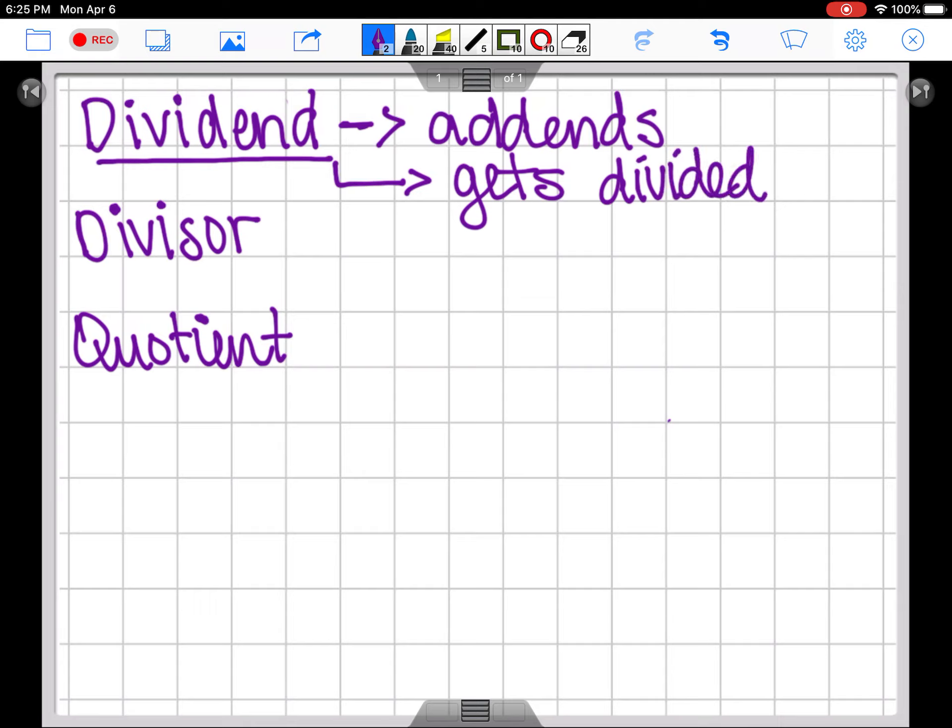We know in a division problem, not all of the numbers are going to be divided into small groups. Only one of those numbers is going to be split up into equal groups. The dividend is always going to be that number that gets split into equal groups.